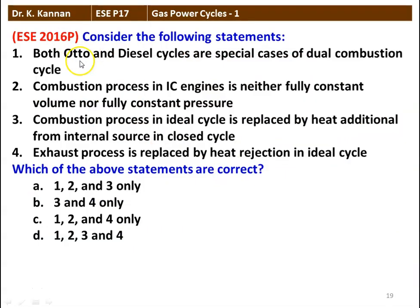First question from the 2016 question paper — consider the following statements. Both auto and diesel cycle are special cases of dual combustion cycle — this is true. In the dual combustion cycle, combustion is at constant volume and constant pressure. In the auto cycle, combustion is at constant volume, and in the diesel cycle it is at constant pressure. Second point: combustion process in IC engines is neither fully constant volume nor fully constant pressure — that is also true.